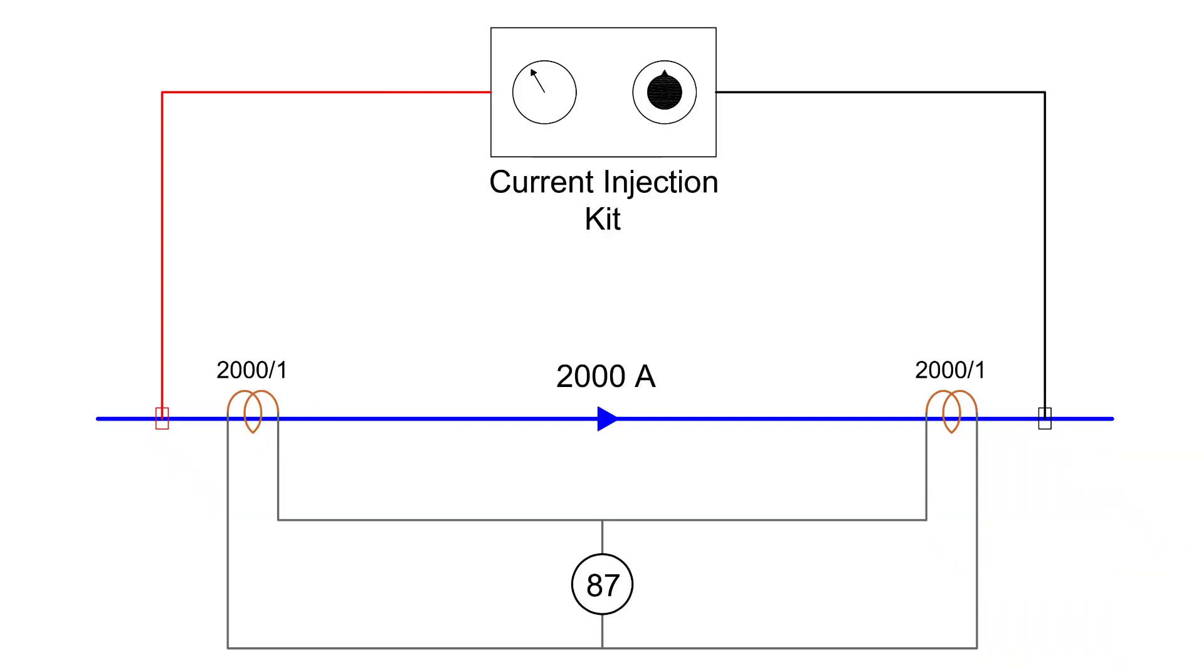For example, if a circuit is rated at 2000 amps, then 2000 amps of current must be injected into the circuit to ensure the overall healthiness of the equipment and the proper functioning of the protection scheme.